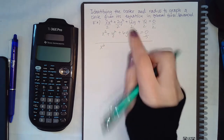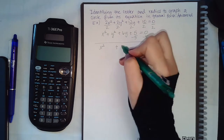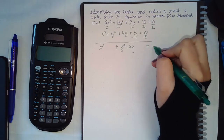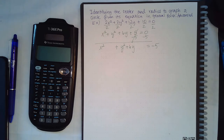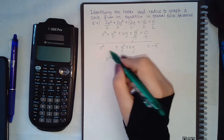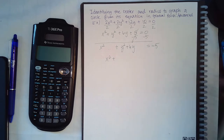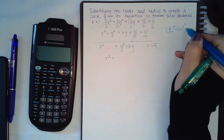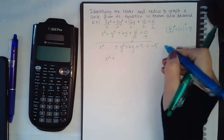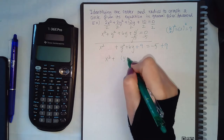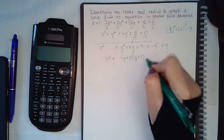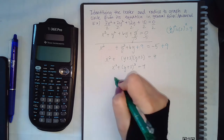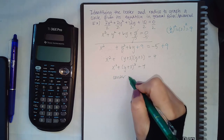There are no x terms, so I leave x squared by itself. I group y squared plus 6y and move the constant to the other side, leaving negative 5. Since there's no x term, we don't complete the square for x. For y: take positive 6 over 2, squared, which is positive 3 squared, equal to 9. Add 9 to both sides, and y squared plus 6y plus 9 factors into y plus 3 times y plus 3, with the right-hand side equaling 4.